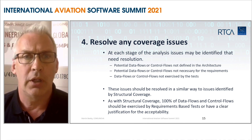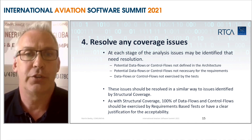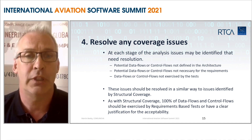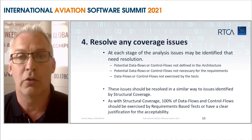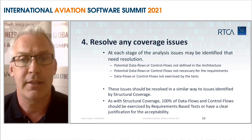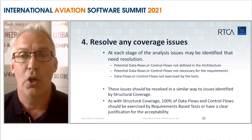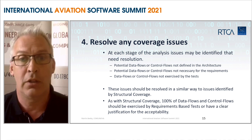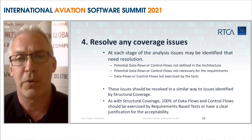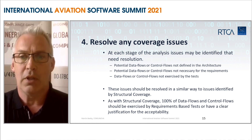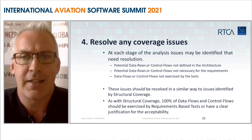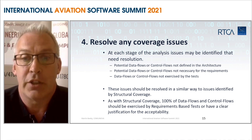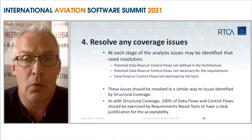Like all coverage analysis, we will find issues, and for each of those issues we will need to identify some kind of resolution. It may be that we find data flows and control flows that aren't documented in the architecture but are implemented in the source code, indicating a deficiency in the architecture. We might also find data flows and control flows that aren't needed to support the requirements, or flows that are not exercised by the test. This can yield potential errors within the design that should be removed. And like structural coverage, we need to reach the 100% coverage metric in order to say that we are complete.